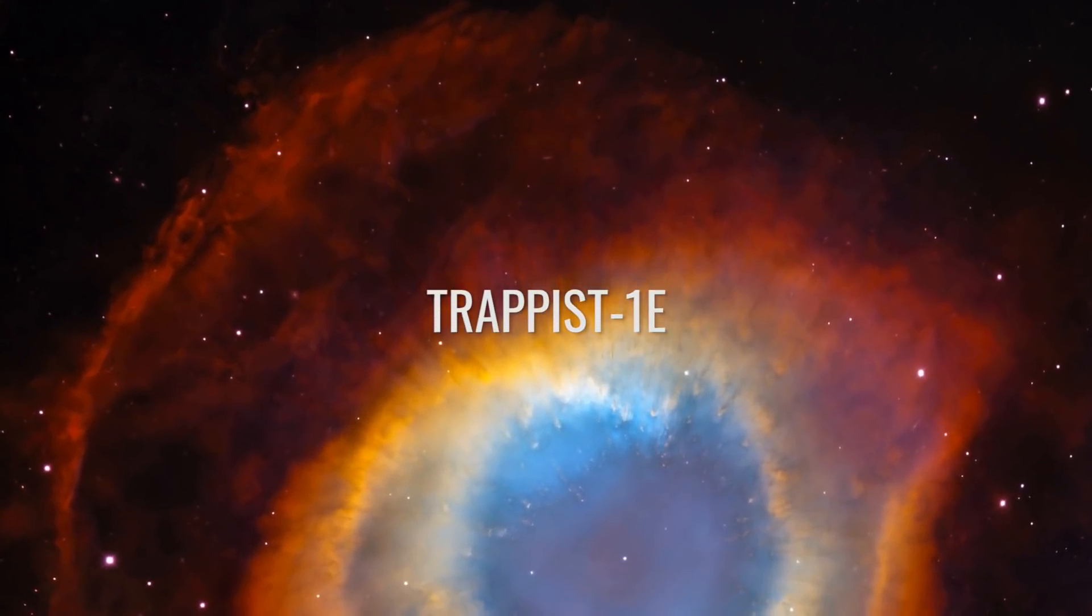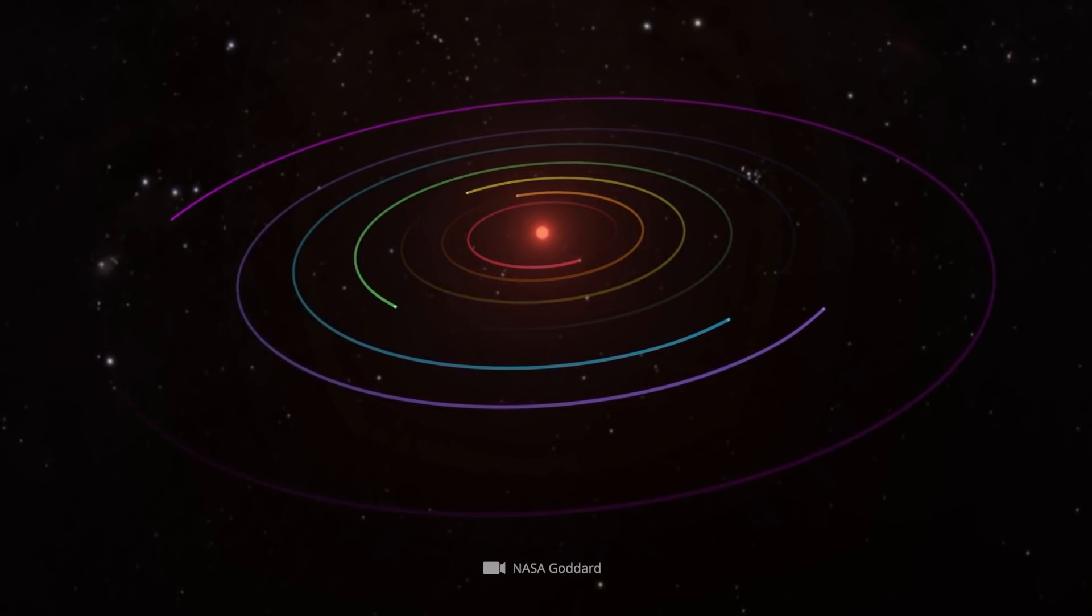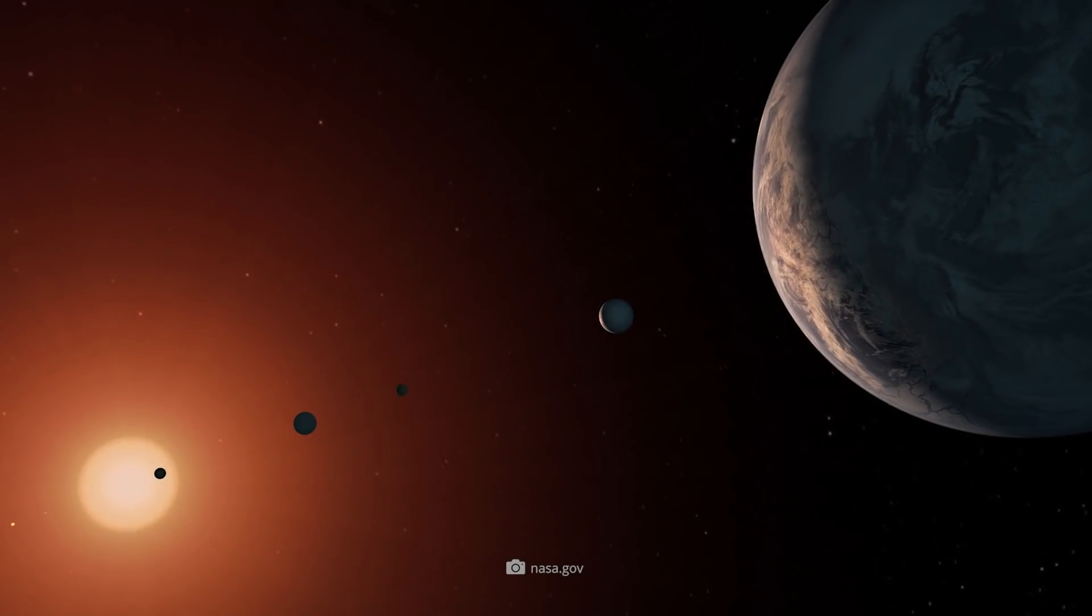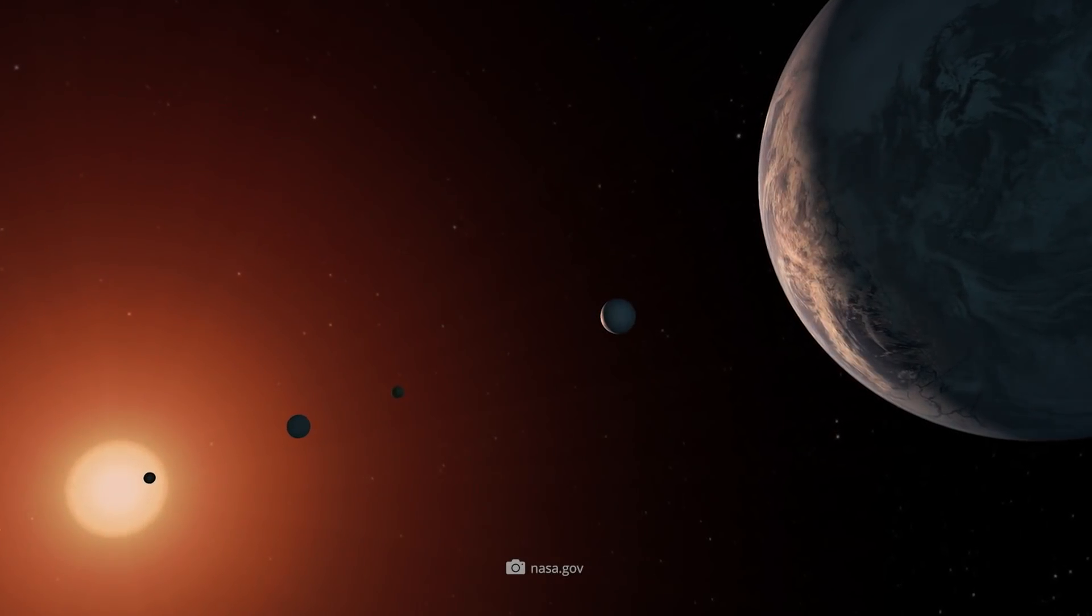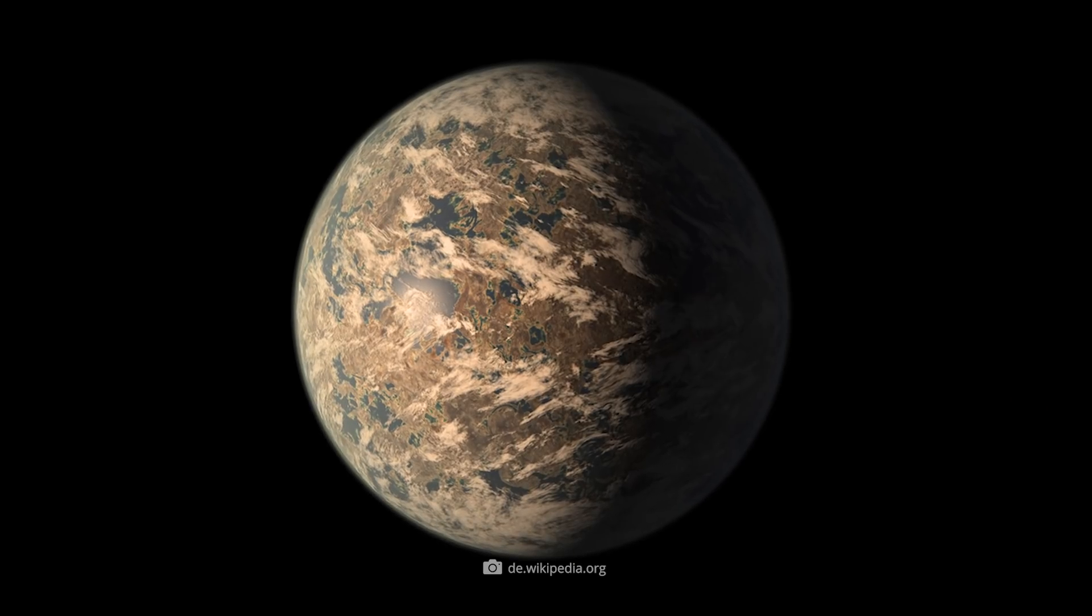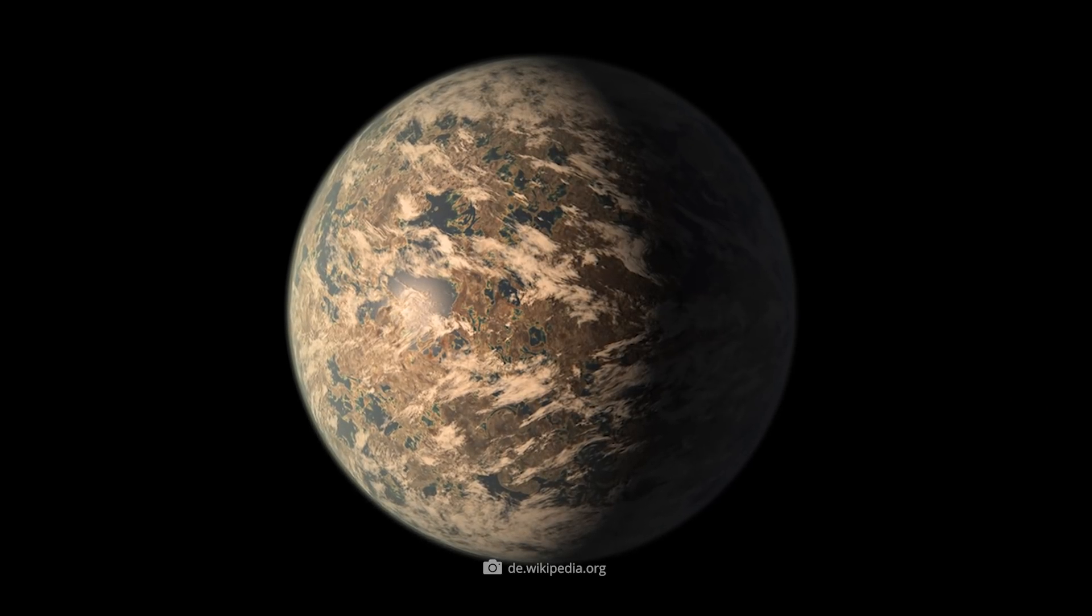TRAPPIST-1e. In the constellation of Aquarius is the star TRAPPIST-1. It is orbited by several exoplanets, of which TRAPPIST-1e is an Earth-like planet with an Earth-similarity index of 0.85.